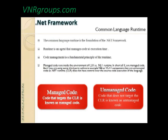For example, a C program doesn't run under the CLR domain — it runs in its own runtime. VB6 and C++ programs similarly run in their own runtimes. A .NET program runs within the CLR domain, so it's managed code, whereas C, C++, VB6, COBOL, or anything not compiled to MSIL is unmanaged code. The managed keyword itself refers to the CLR.